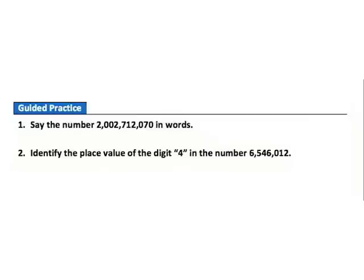Now it's time to check your understanding of our place value system. Hit pause on your video player and answer these two guided practice questions. When you finish, hit play to see how you did. Question one: say this large number in words. There are four periods, so the fourth period is billions. The answer is: two billion, two million, seven hundred and twelve thousand, seventy. Question two: identify the place value of digit four. That digit four is in the thousands period, in the tens place — so it is in the ten thousands place.